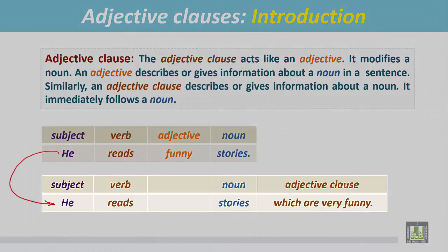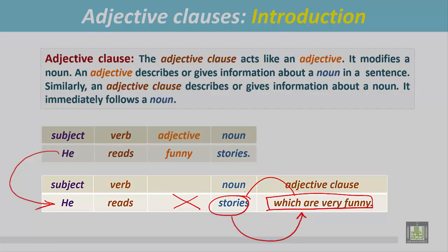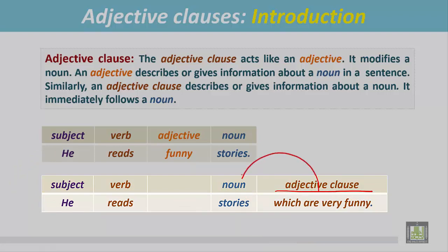The same sentence has been written in a different way. He reads stories. There is no adjective before this noun, but this noun has been modified with this part of this sentence: which are very funny. This part is modifying this noun. From this part, we understand that stories are very funny. So the adjective clause immediately follows the noun and it modifies the noun.